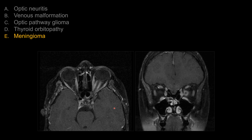For choice B, venous malformation — that's orbital hemangioma. Typically they present with a heterogeneous enhancing mass that's retroorbital, often causing quite a bit of mass effect on the optic nerve and surrounding structures. This lesion here shows circumferential enhancement, so it's not the typical appearance for hemangioma.